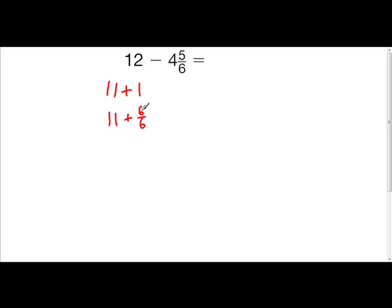So we have 11 and 6 sixths, and we have 4 and 5 sixths. So let's subtract 6 minus 5. 6 minus 5 is 1. Remember, we keep our denominators the same. And 11 minus 4 is 7. So our answer is 7 and 1 sixths. I bet you that was a lot easier than you thought it was going to be.